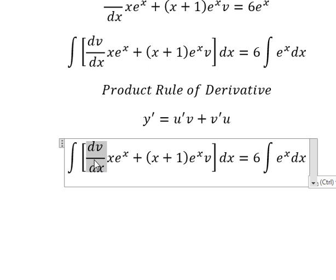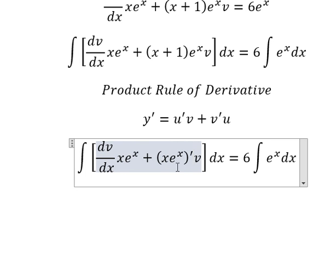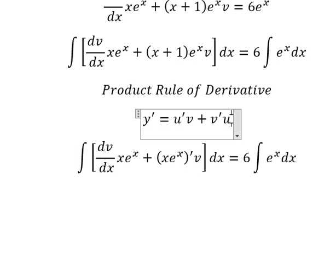This is the first derivative of u multiplied by v. This is the first derivative of v multiplied by u. So if we integrate this, we have y equals uv.